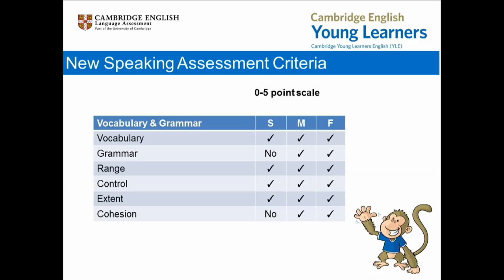Let's look first at vocabulary and grammar. The criteria are similar for all three levels, but movers and flyers include some criteria which are not relevant to starters, simply because at starters level, candidates are not expected to speak at sentence level. So grammar is not assessed at starters, and nor is cohesion — which is the way words and sentences are joined together using linking words and other cohesive devices.